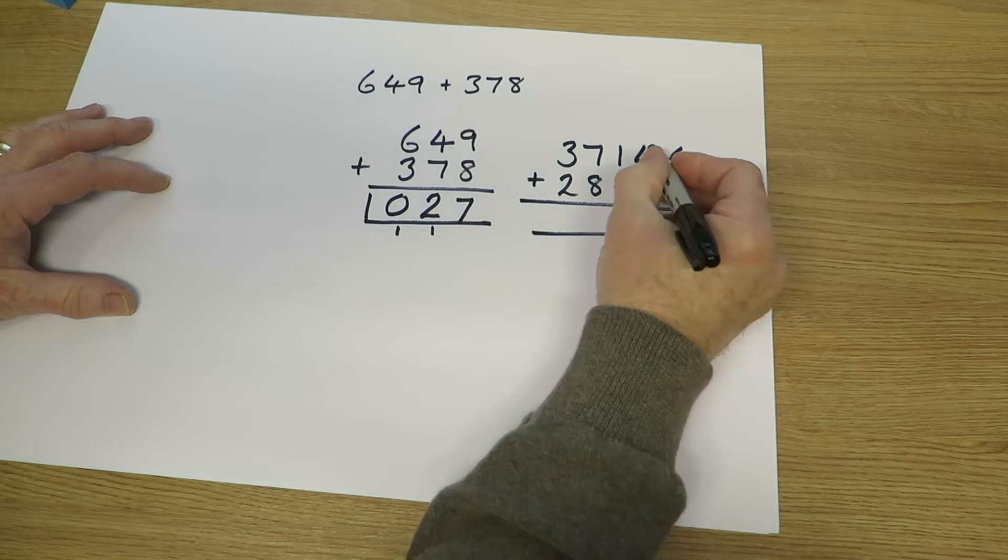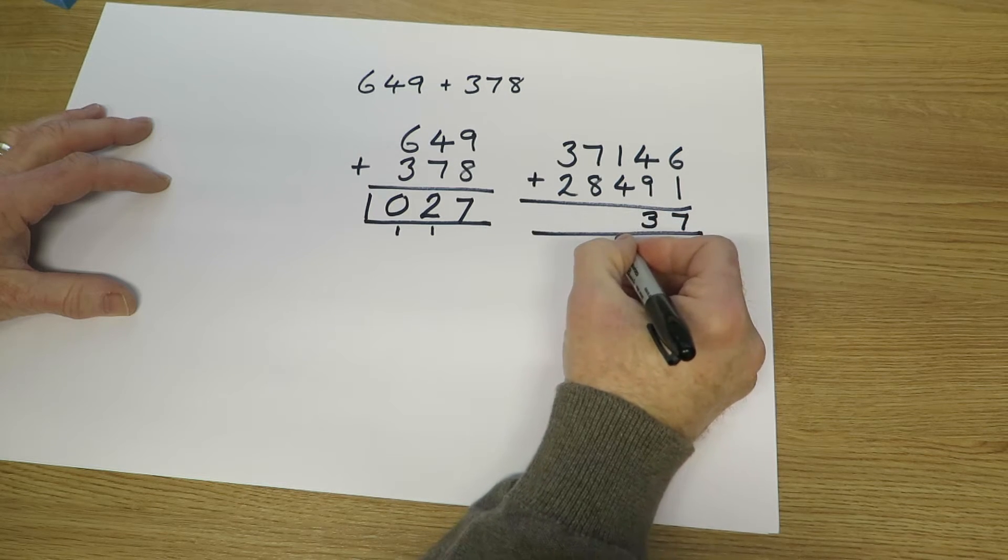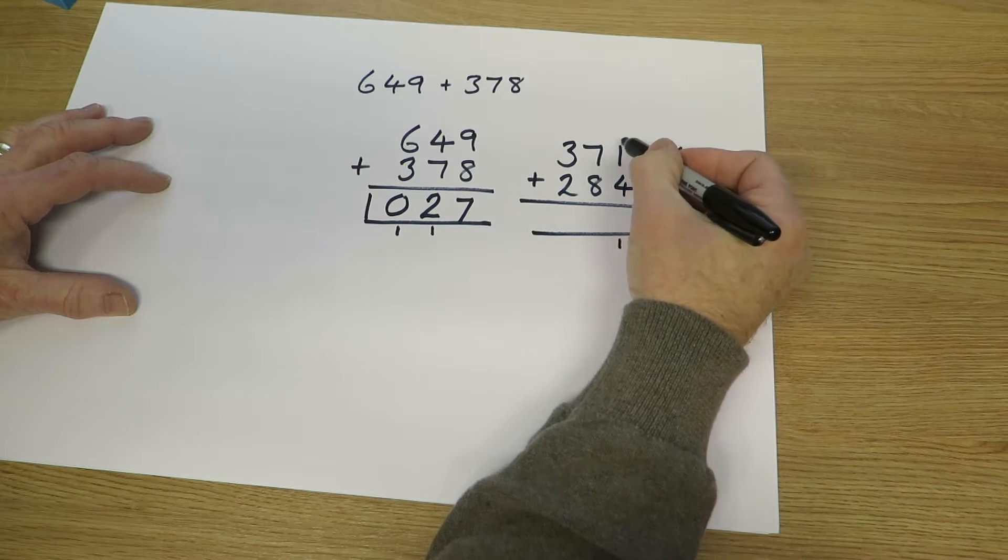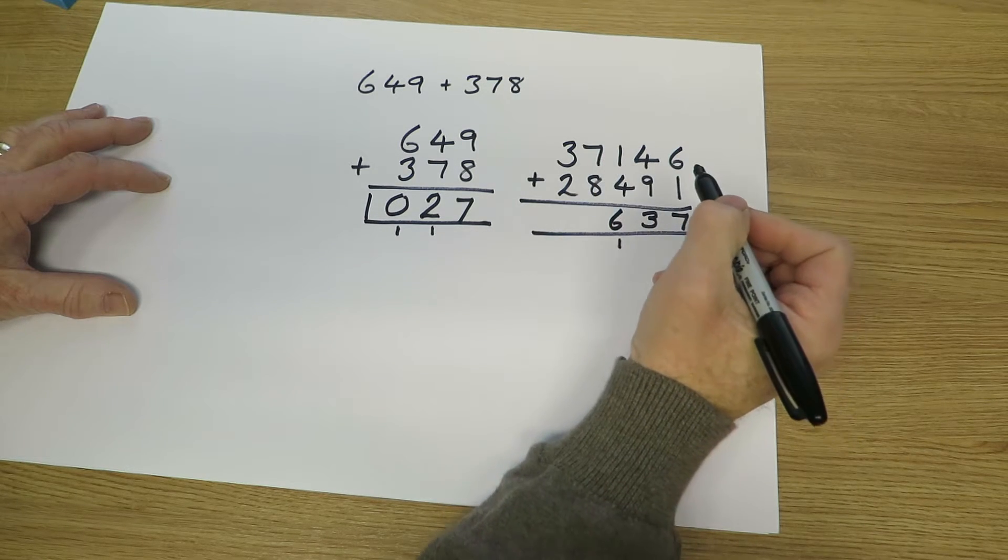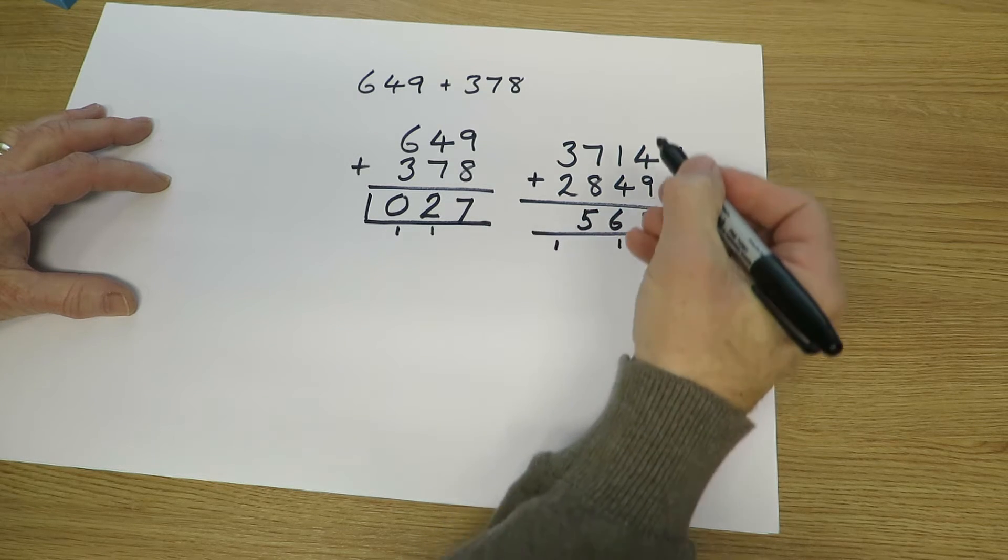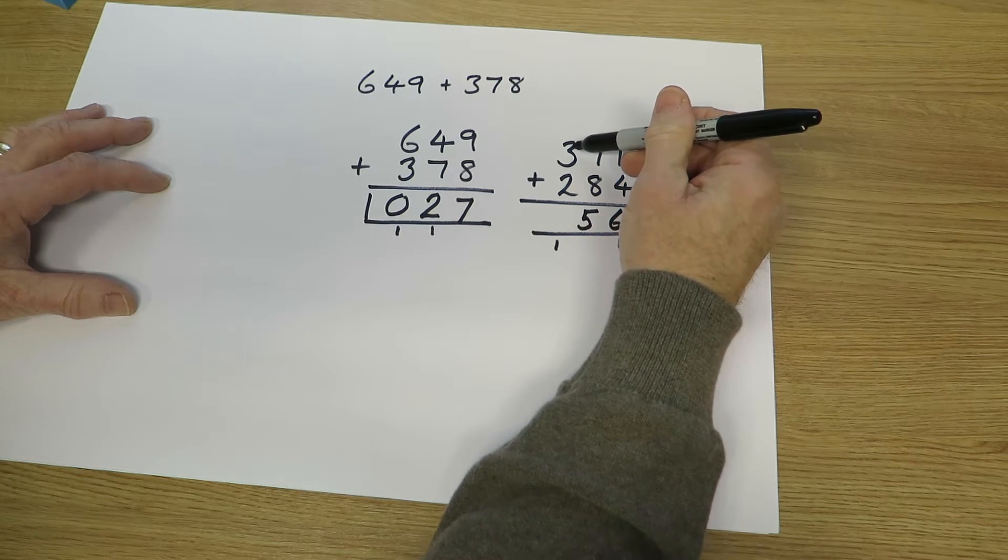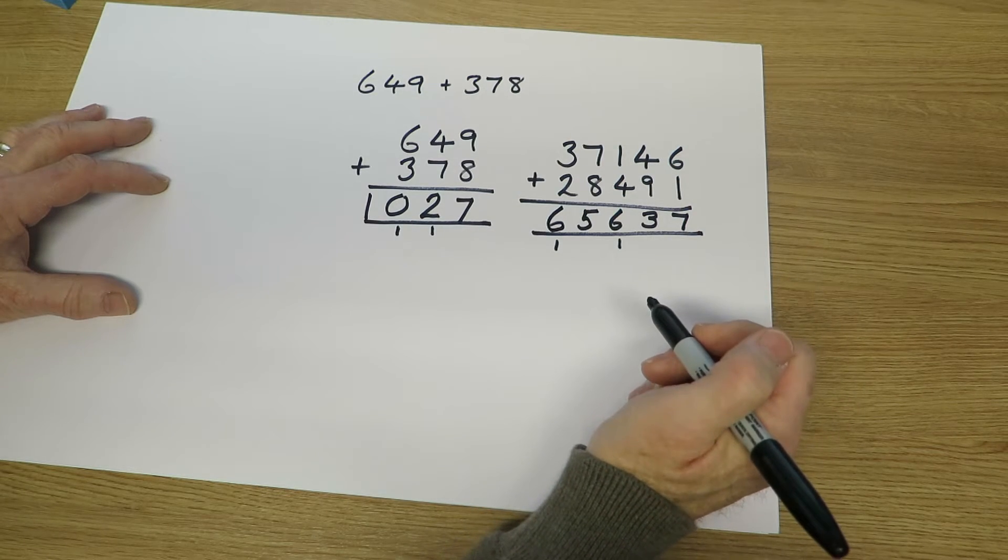6 add 1 is 7. 4 tens and 9 tens, that's 13 tens. Hundreds now. One and four is five and one makes six. Thousands. Seven add 8 is 15. Ten thousands. Three, four, five, six. 65,637.